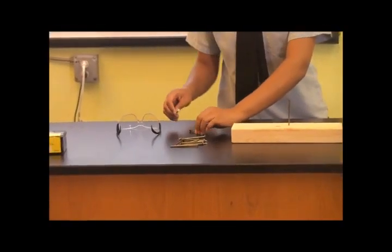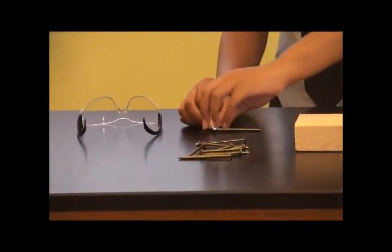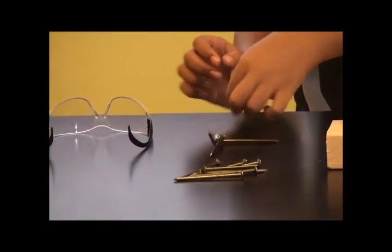So you start off with one nail and you place your nails back and forth, crossing each other going left to right. So there's four nails on one side and five on the other.